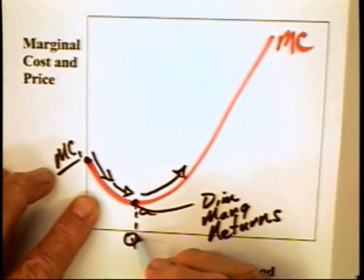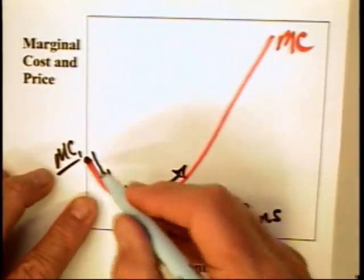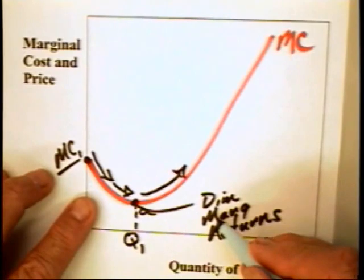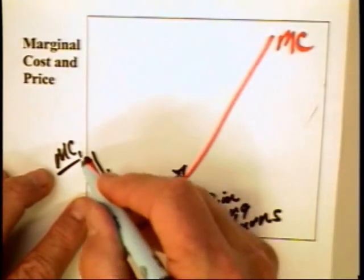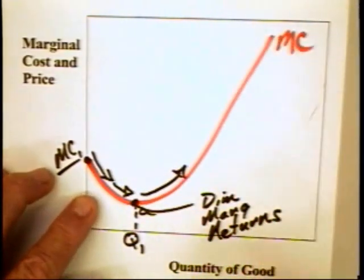We have it specified at Q1. It might not be there. It could, in fact, go down even further and then up. But all we know is the general shape of the curve is going to look like this.